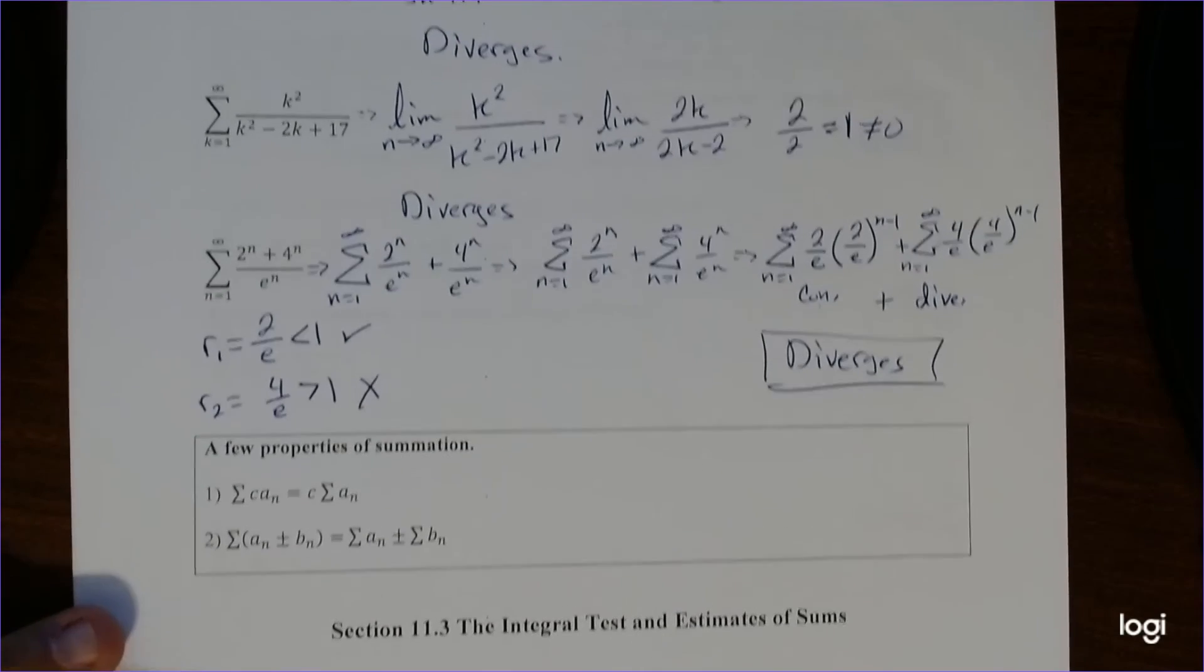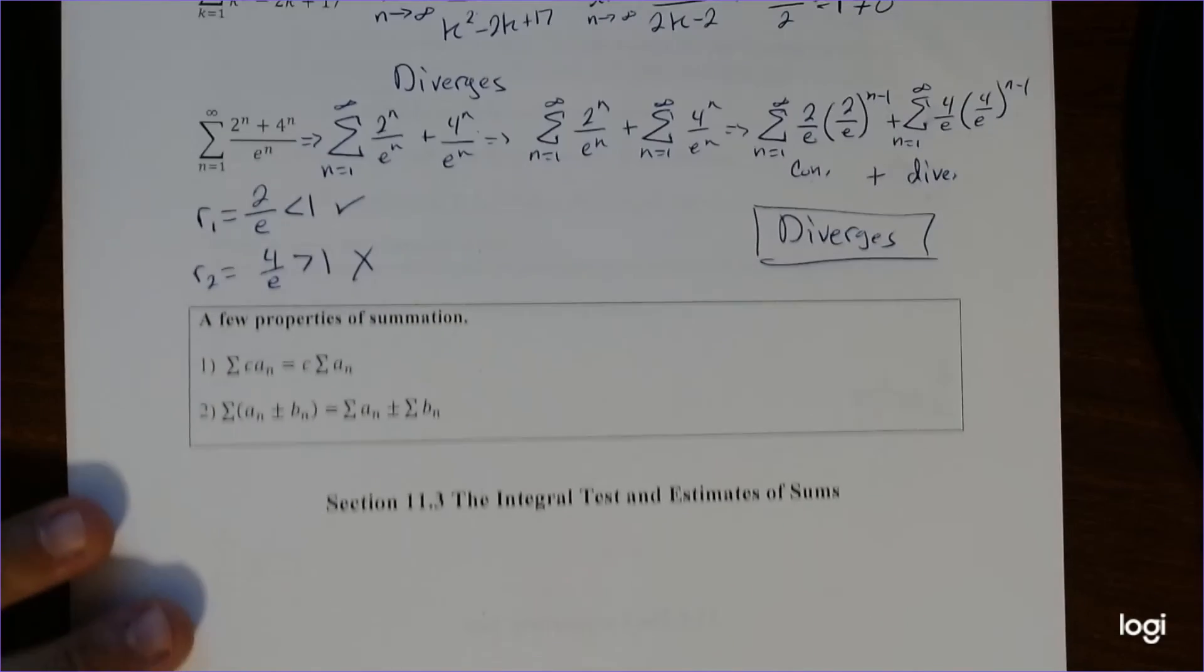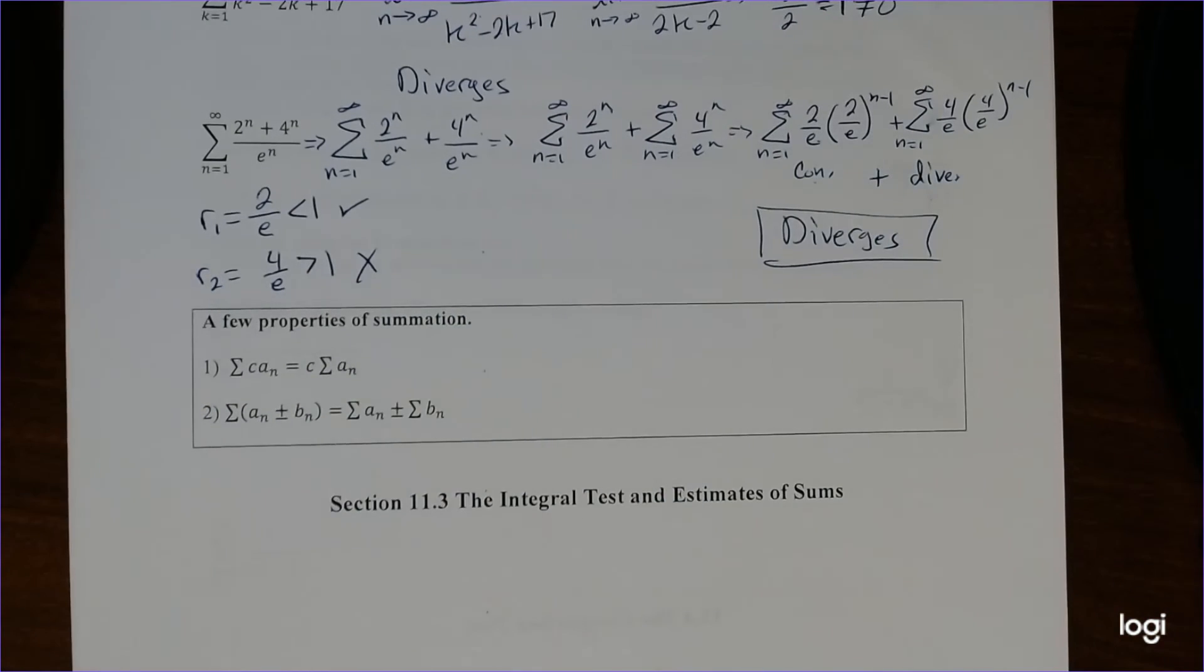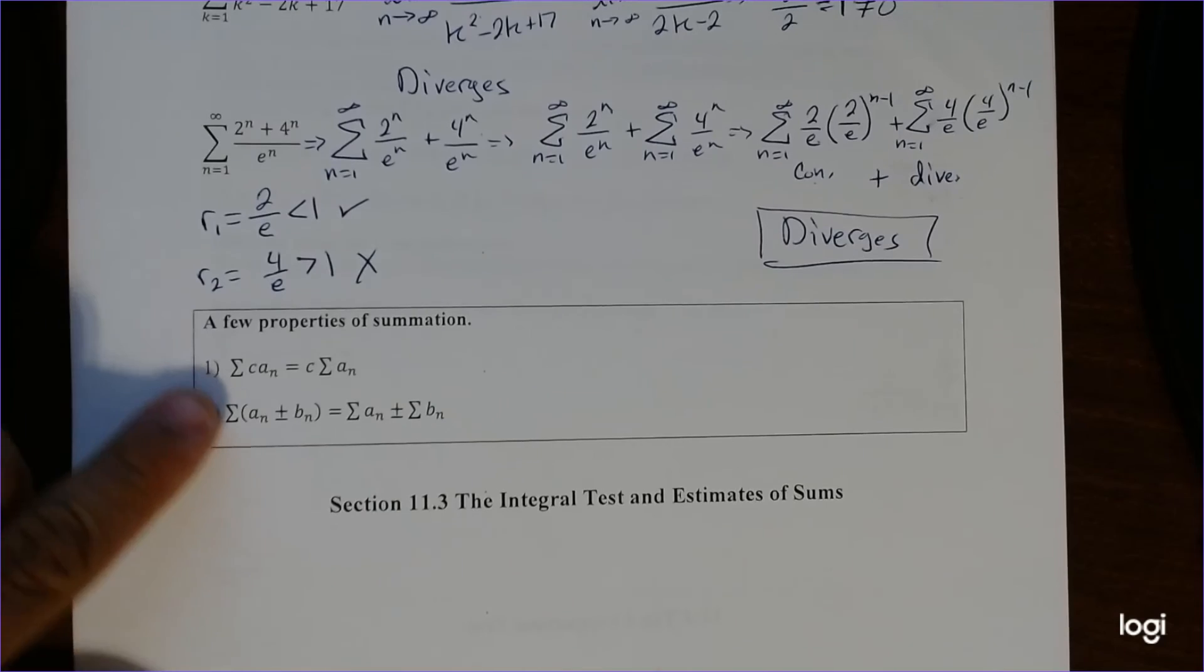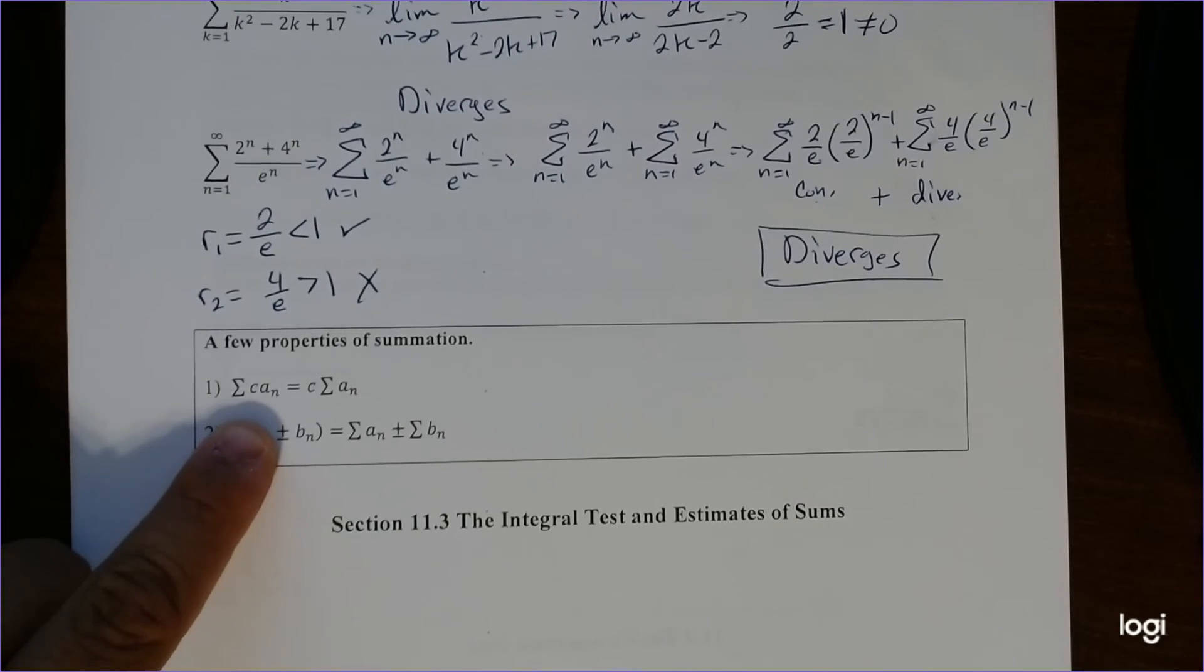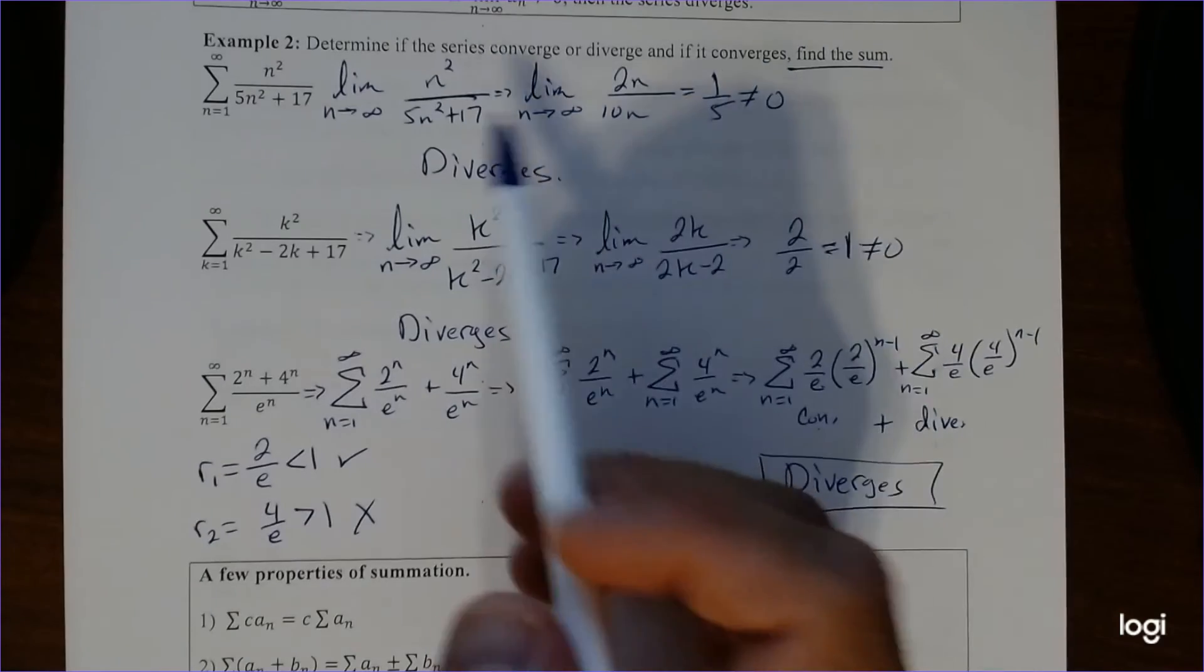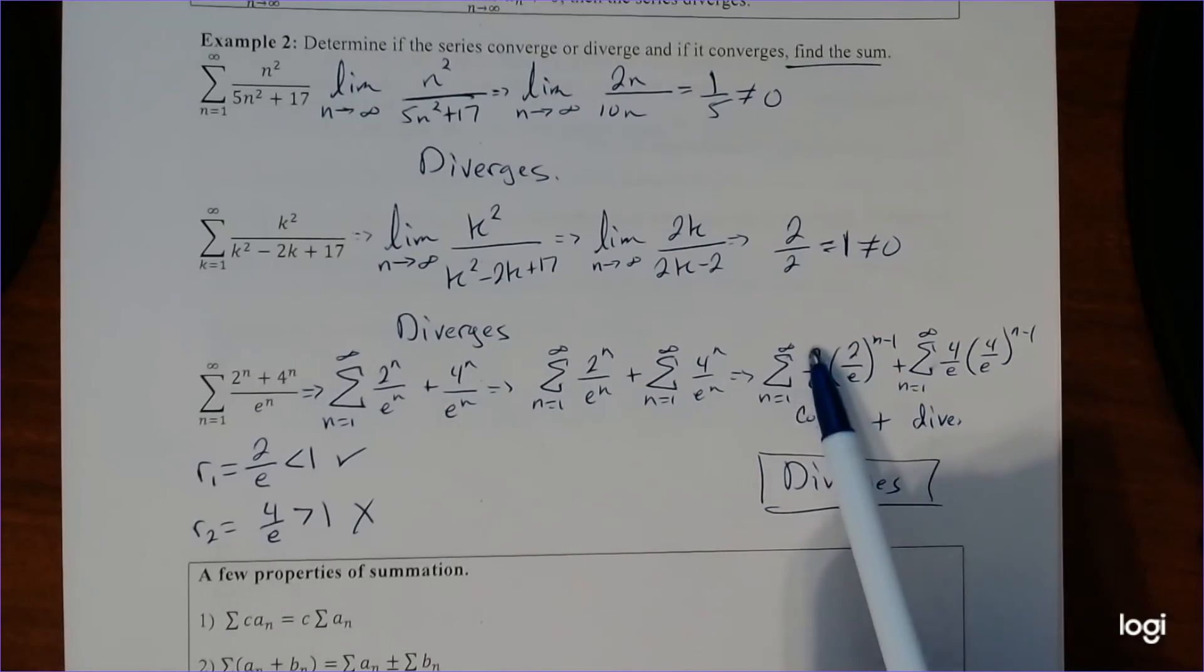So those are our first properties there. And in fact, I actually use this property here to illustrate this. So a few properties of summations. We talked about this earlier, right? So if I have a constant, I can literally just take it on the outside. So if I really wanted to, I could take this value, put it on the outside, this value, put it on the outside.